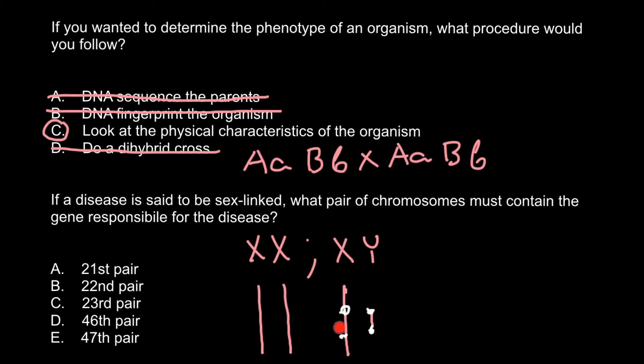Because these two chromosomes have homologous fragments, they may line up during meiosis and mitosis. As you can see, the correct answer is answer C. If a disease is said to be sex-linked, we know that it is caused by mutations found on the X chromosome or Y chromosome — that is the 23rd pair of chromosomes in our karyotype.